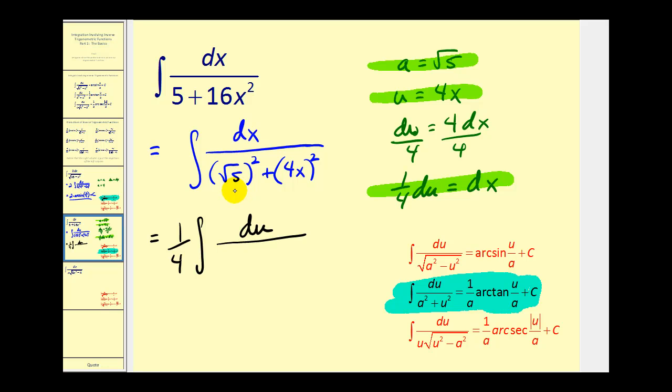The square root of five is equal to a, so we would have a squared plus, and u is equal to four x, so we do have u squared. So this fits the pattern that we need to apply the formula. So we're going to have one-fourth times this antiderivative, which would be one over a, so one over the square root of five, times arctangent of u over a plus c. Again, u is four x, and a is square root of five. And, of course, we can rewrite this first fraction as one over four square root of five.